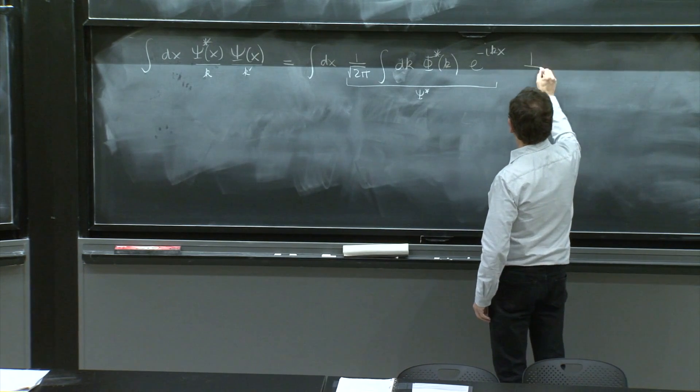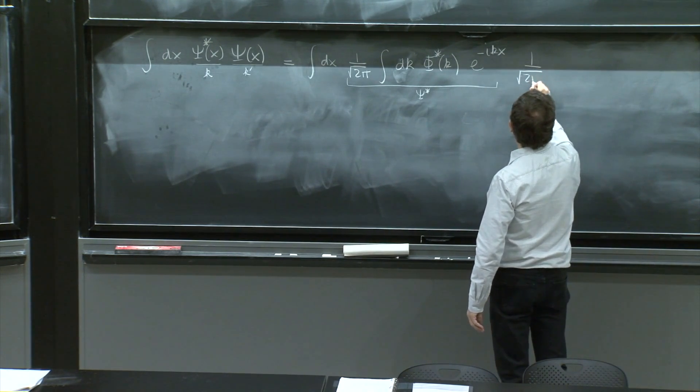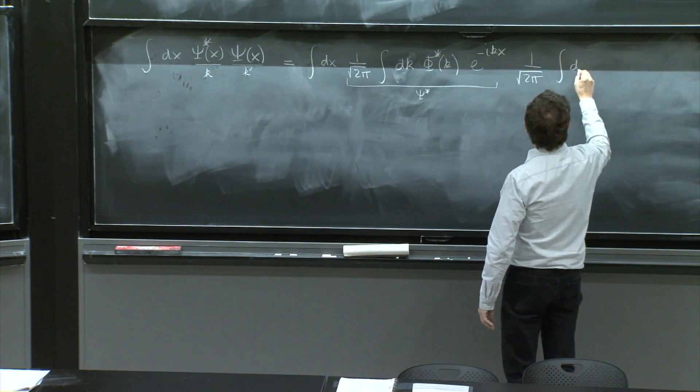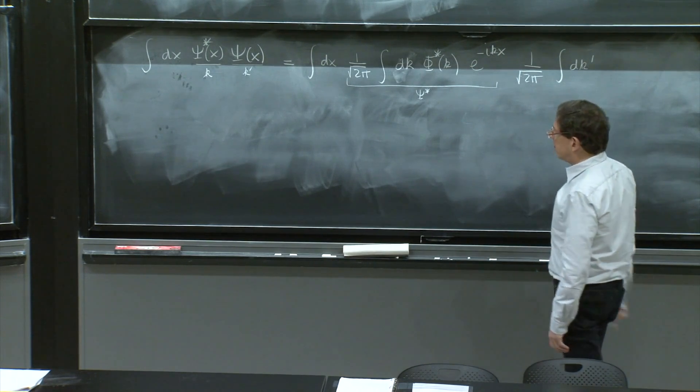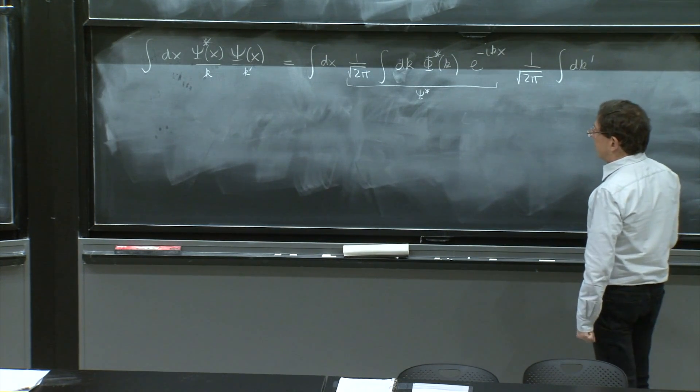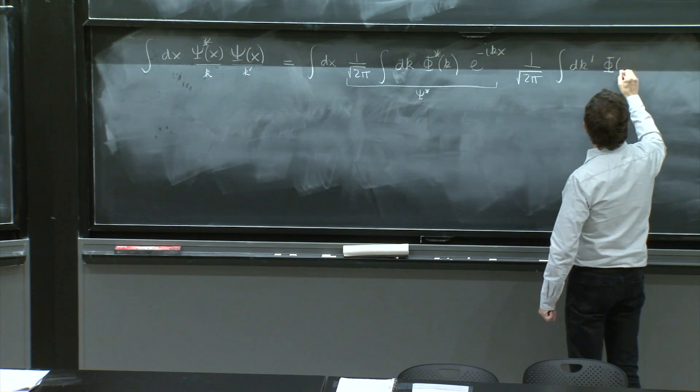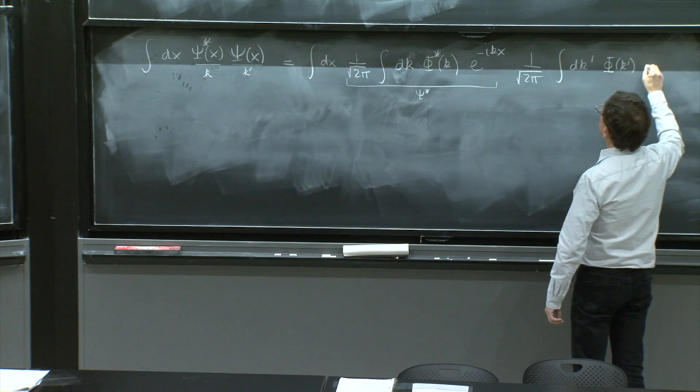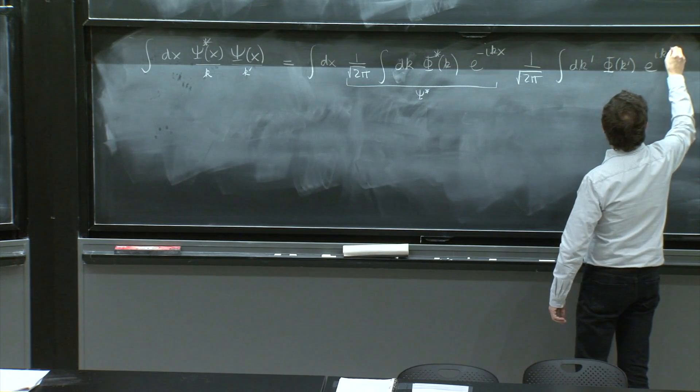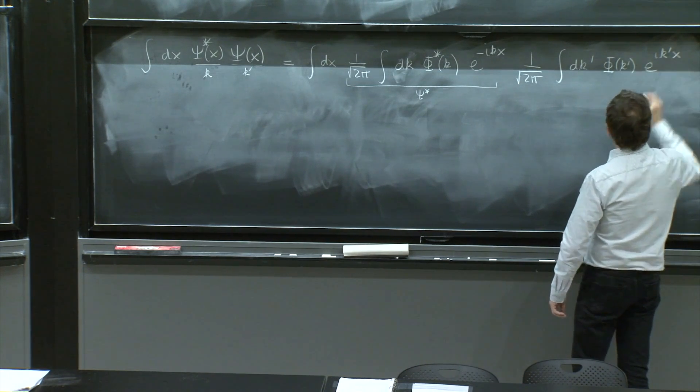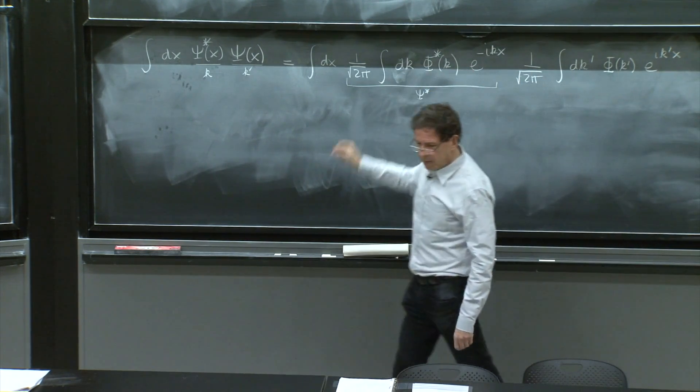And now, we put psi. So this is dk prime, phi of x, dk prime, phi of k prime, e to the ik prime x. It's the same x in the three places.